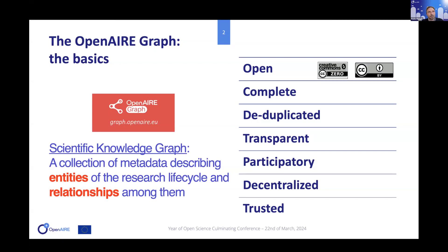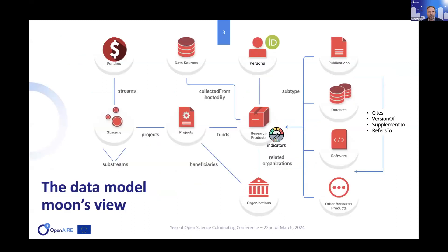The whole idea is to bring together an amount of information, made available as open data, that can be used for many end-user applications such as discovery, monitoring, or research assessment. We make this graph public — it's a public good funded by the European Commission and part of the EOSC, the European Open Science Cloud. The graph is made up of research products: publications, research data, software, and other products.